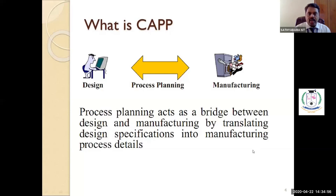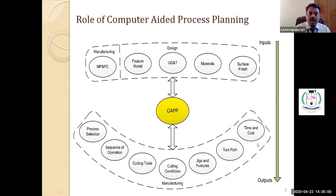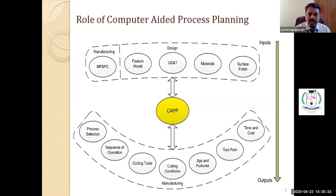I would like to give an idea with respect to an industry — the application and significance of computer-aided process planning. A manufacturing industry might consist of design department, manufacturing department, quality control department, quality assurance department, and marketing department. We concentrate only on the design and manufacturing departments. The design department handles part or geometric model creation, selection of geometrical dimensioning and tolerancing, selection of material, and the required surface finish level.